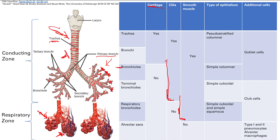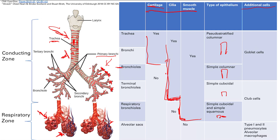The type of epithelium goes from taller to shorter as you move deeper: pseudo-stratified columnar, then regular columnar, then cuboidal, then simple cuboidal, and finally simple squamous. For additional cells: goblet cells in the trachea, bronchi, and bronchioles secrete mucus. Club cells help produce components of surfactant and help degrade toxins.